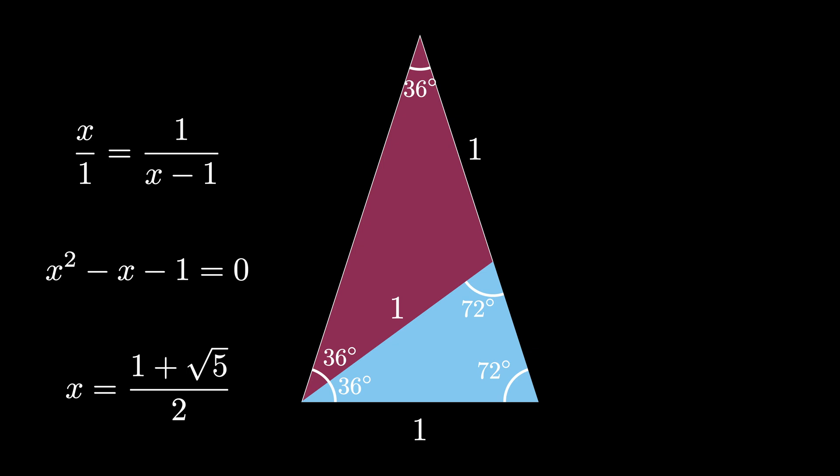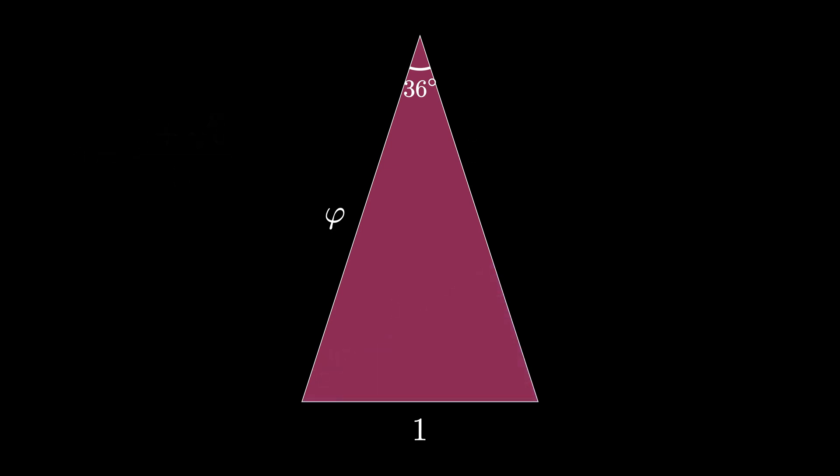It turns out that 1 plus the square root of 5 over 2 is the golden ratio phi. That means that this triangle has a side length given by the golden ratio. In fact, this triangle is known as a golden triangle because of this property.